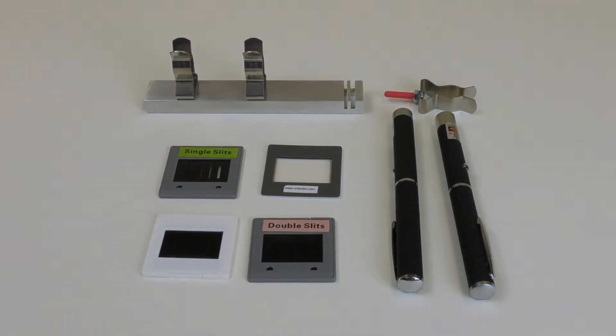The kit includes a support base, a single axis diffraction grating, a single slit slide with various widths, and two slides for investigating double slit diffraction.